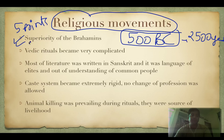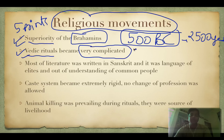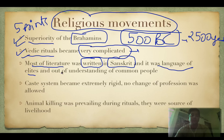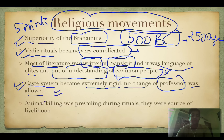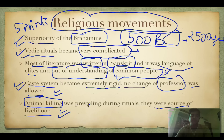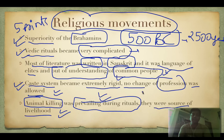First, there was the superiority of the Brahmans. Second, the Vedic rituals became very complicated, beyond the understanding of common people. Third, most literature was written in Sanskrit — the language of elites, out of reach for common people. Fourth, the caste system in the later Vedic period became extremely rigid with no change of profession allowed. Fifth, animals like cows, goats, and beasts of burden were being killed in rituals. These five reasons drove common people away from existing religions.